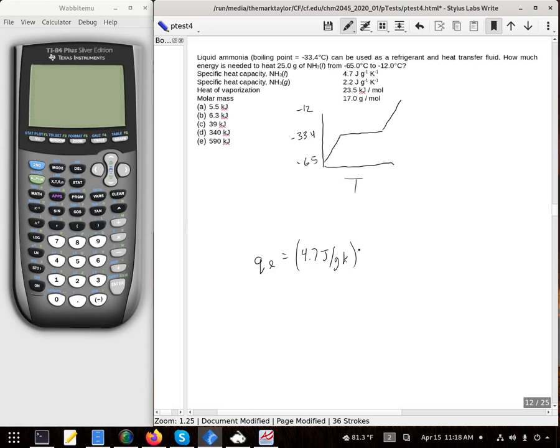We got grams in Kelvin, so we know we're going to use the mass of 25 grams. And then the temperature change is going to go from negative 65 to negative 33.5.